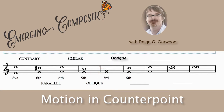Now let's look at the next measure. We have a sixth going to something — I didn't put the interval down, so let's figure it out. The bottom note is F, the top note is D. Starting at F, counting up the musical alphabet: F, G, A, B, C, D — that's a sixth. So we're starting on a sixth and ending on a sixth based on a different note, with the voices moving in the same direction. That is parallel motion.